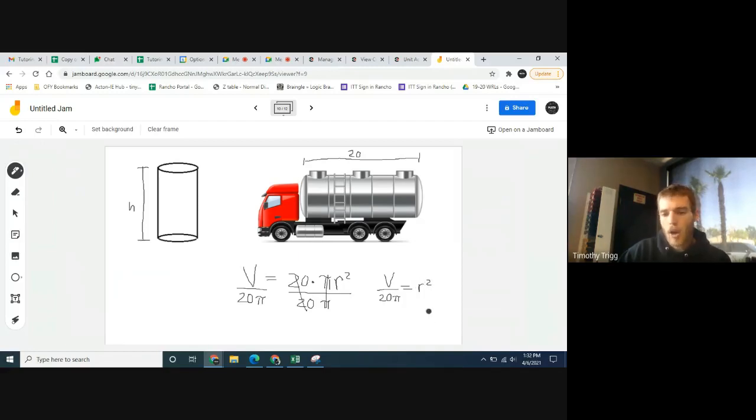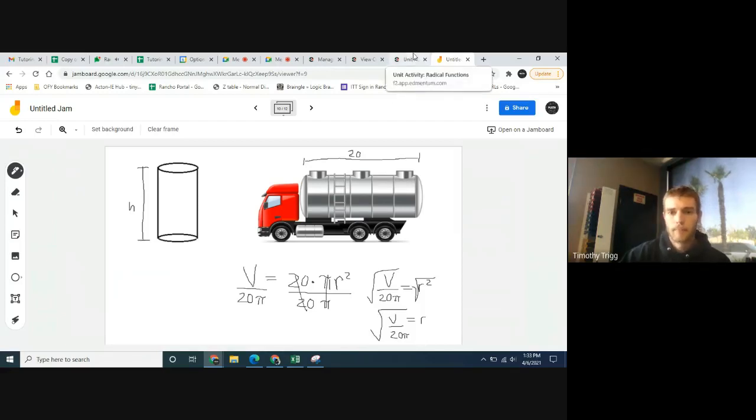Now, how do we get r by itself? We need to get rid of this squared. In order to get rid of squared, you square root. That's where the square root part comes from. This will be r, since the square root and square cancel. On the left side, what we have is the square root of v over 20 pi. And that's it. Not too bad.